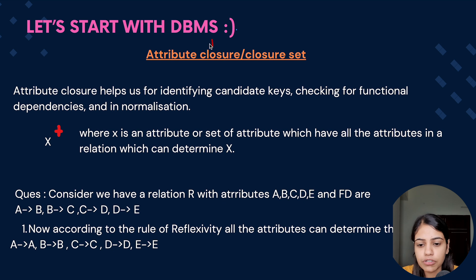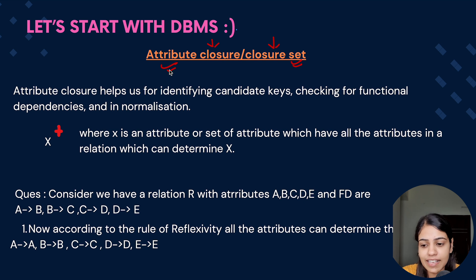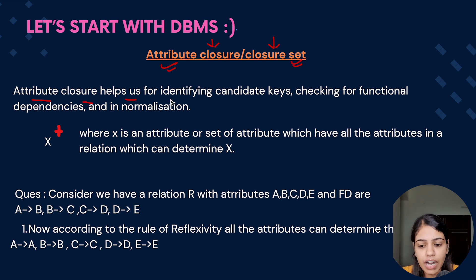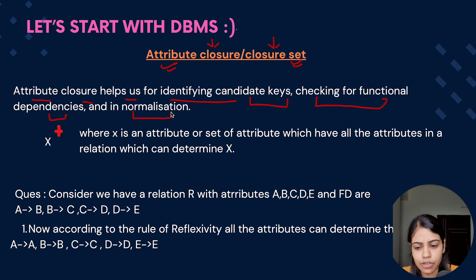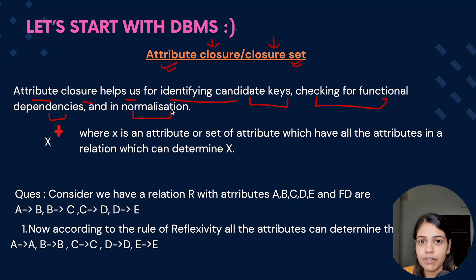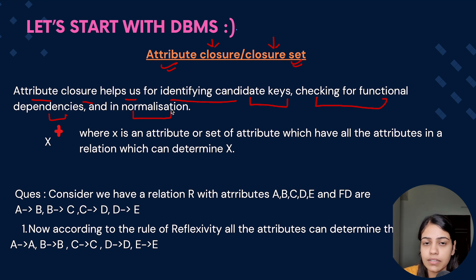What is this attribute closure or closure set? As the name suggests, it will give me a set of attributes. Attribute closure helps us in identifying candidate keys, checking for functional dependencies, and in normalization. Whenever we need help in finding candidate keys or super keys in a relation, or checking functional dependencies present in a table, we use the attribute closure.